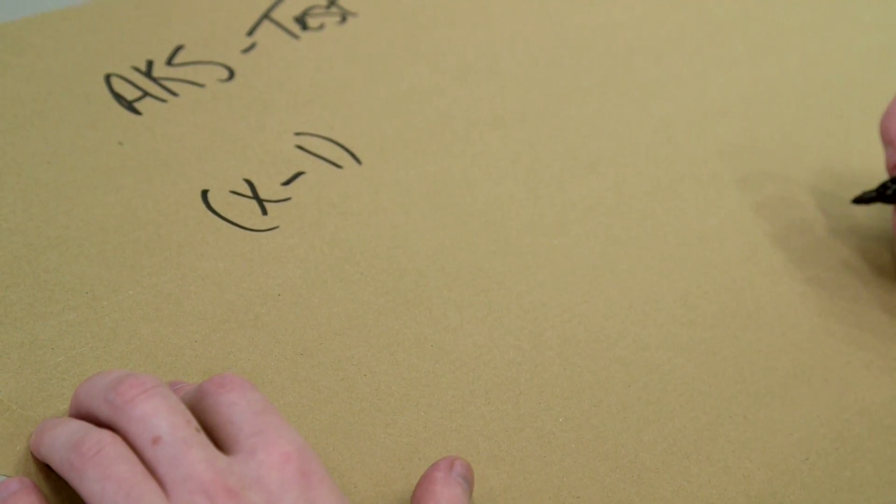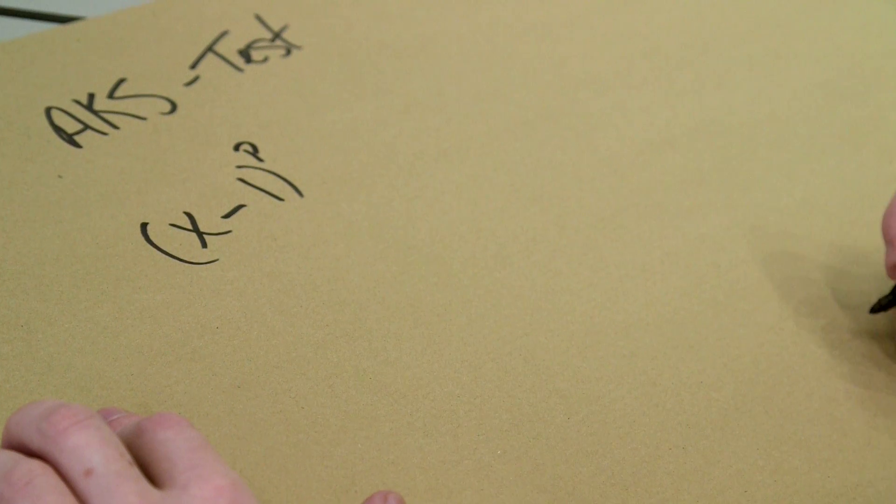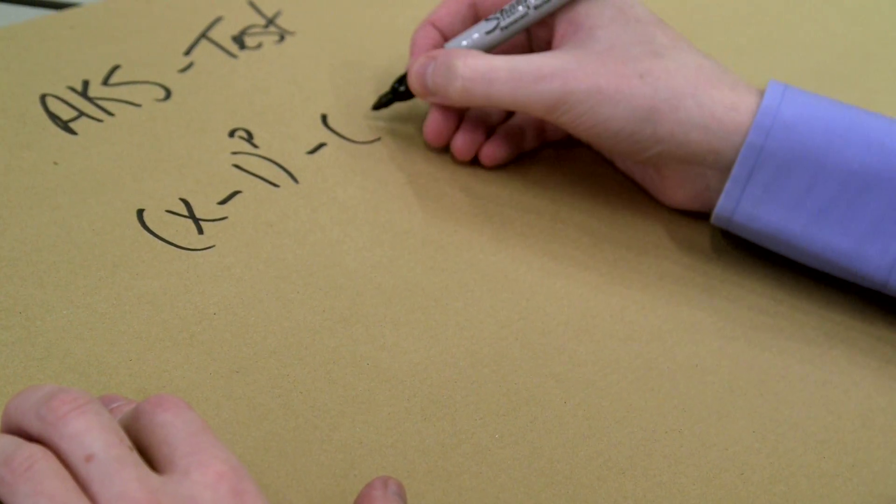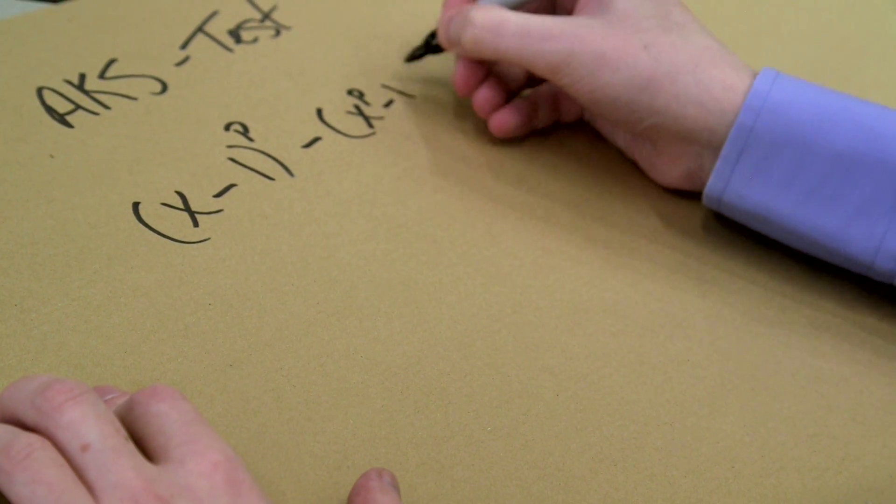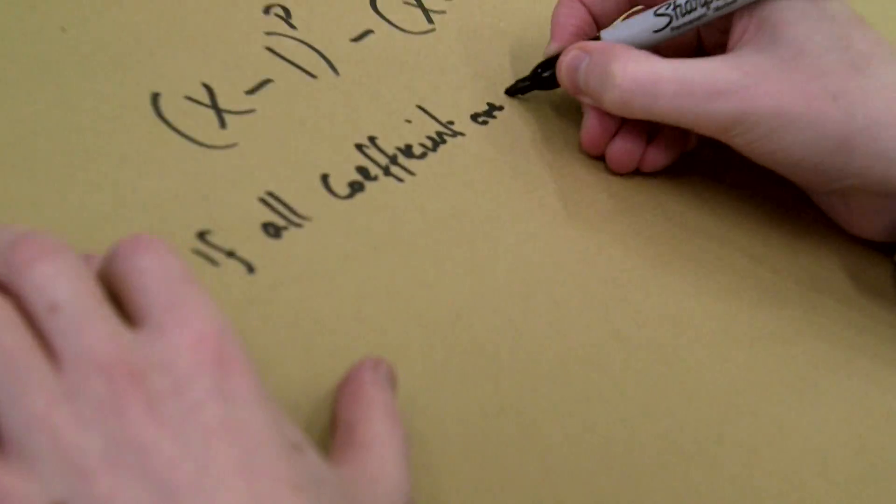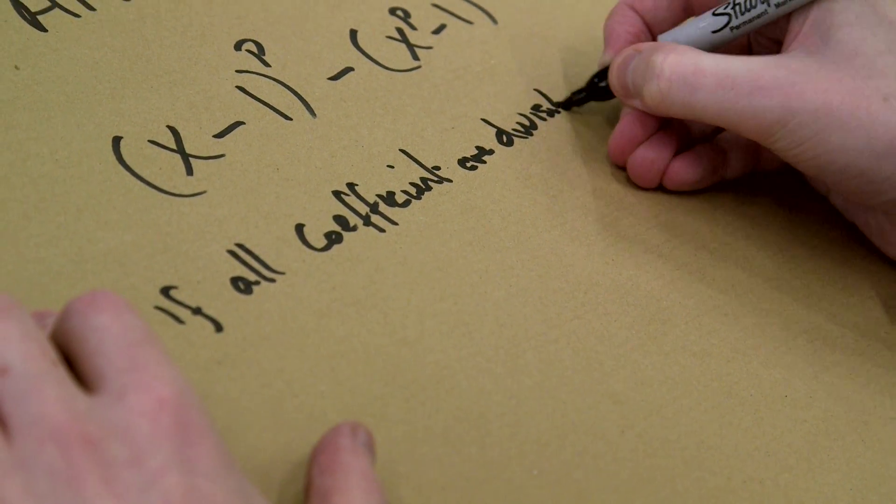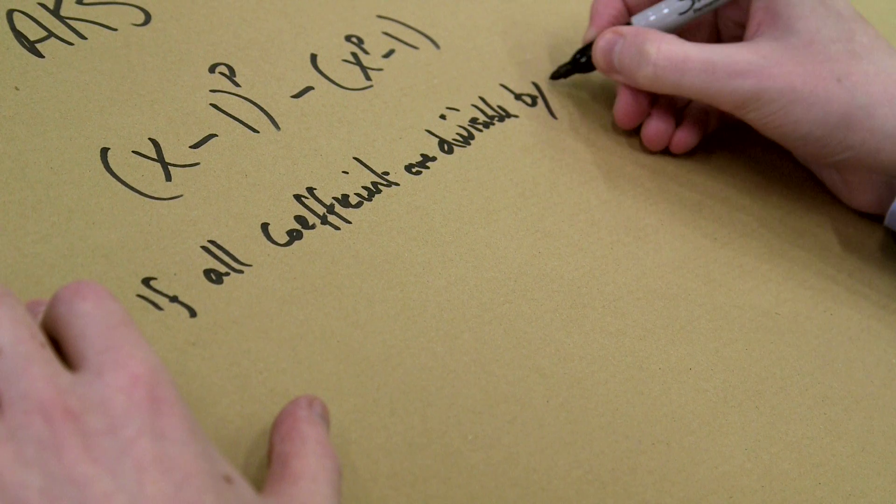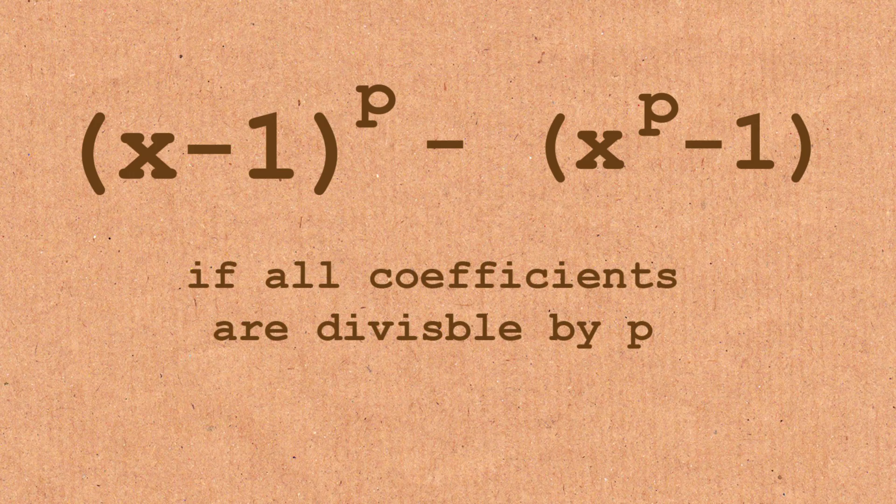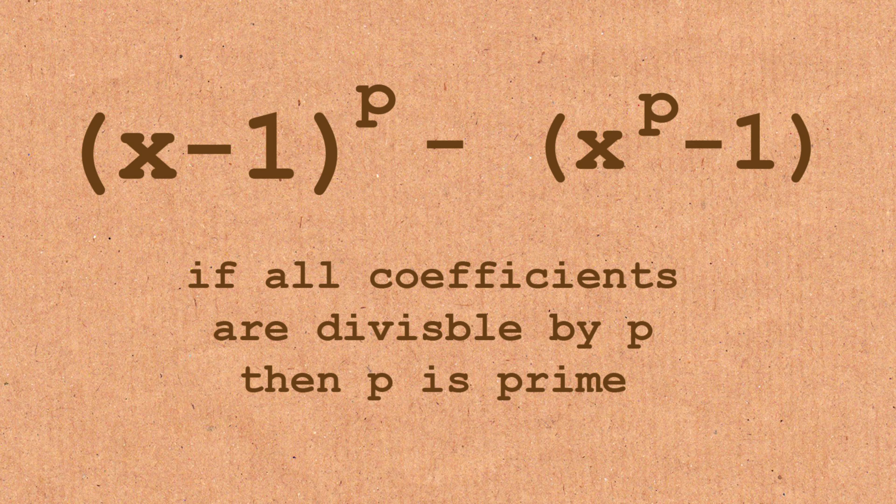We're going to take x minus 1 to the power p, and then we're going to subtract x to the p minus 1. So it's a polynomial. I'll show you an example in a second. If all coefficients are divisible by p, then p is prime. And if they're not, it's composite. It's 100% this test.